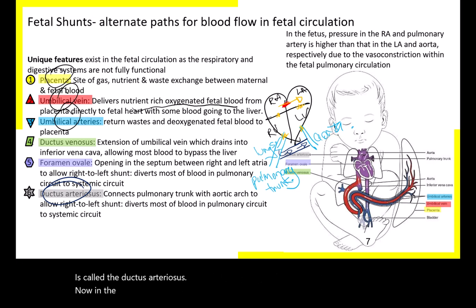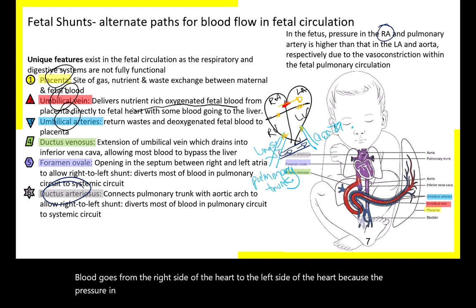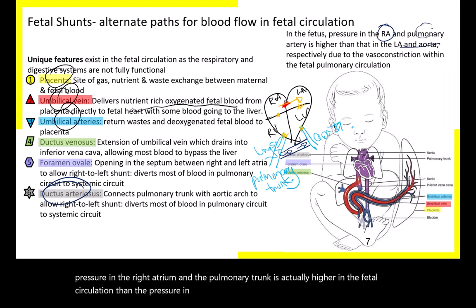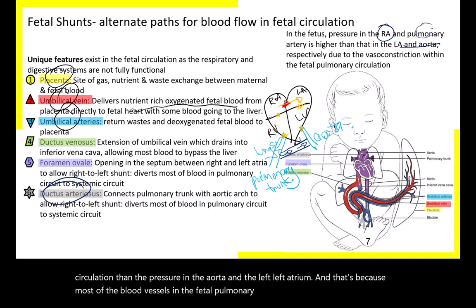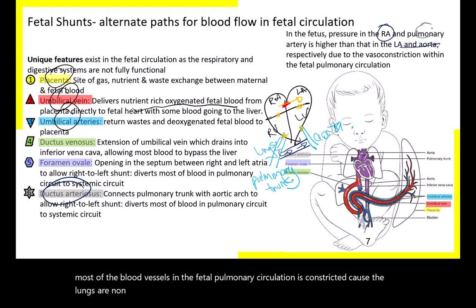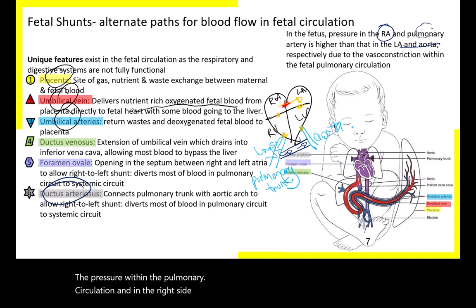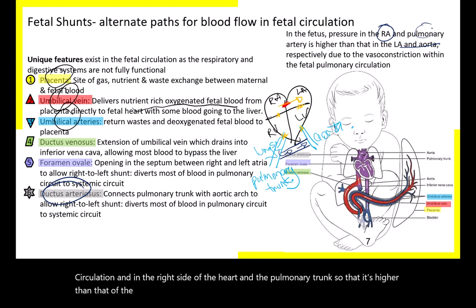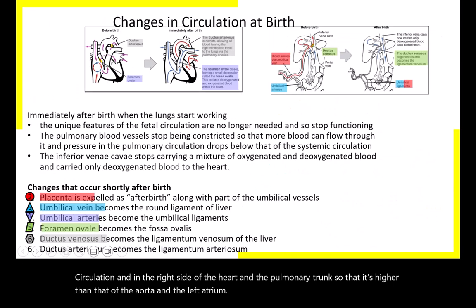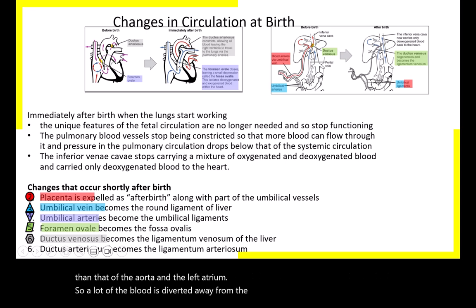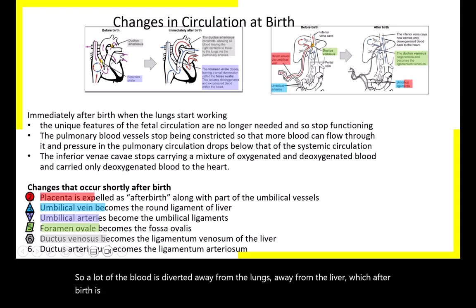In the fetus, blood flows from the right side to the left side of the heart because the pressure in the right atrium and pulmonary trunk is higher than in the aorta and left atrium. This is because the pulmonary blood vessels are constricted due to the non-functional lungs, increasing pressure within the pulmonary circulation and the right heart. As a result, blood is diverted away from both the lungs and the liver.